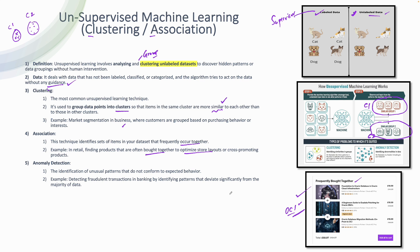We also have anomaly detection, which is used for identifying unusual patterns. The aim of machine learning is to identify patterns and make predictions — here you're identifying unusual ones. For example, a hacker intruding into your network, or detecting fraudulent transactions. You look at various transactions and identify ones that fall outside the normal category, detecting fraud by identifying patterns that deviate significantly from the majority of the data.